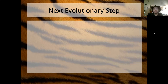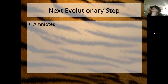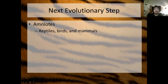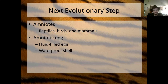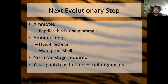The amphibians are the first step onto land. The next evolutionary step is to develop something capable of living out its entire life on land. To do that, you have to have eggs that do not need to be laid in water. Animals that lay eggs not requiring water are called amniotes. Reptiles, birds, and mammals are amniotes — they have the amniotic egg, which is filled with fluid and has a waterproof shell. Because of this, no larval stage is required and the young hatch as completely terrestrial organisms.